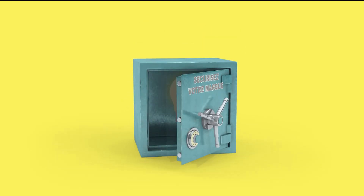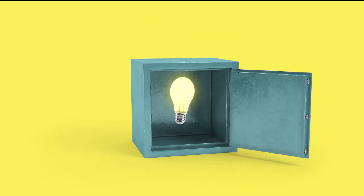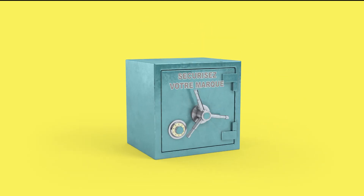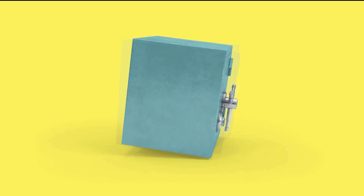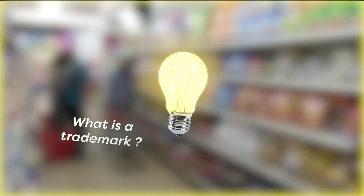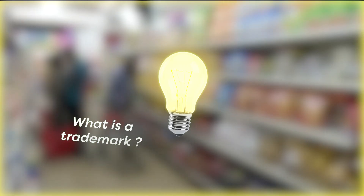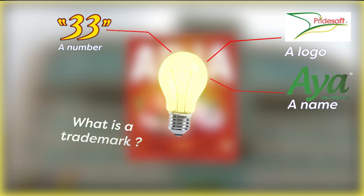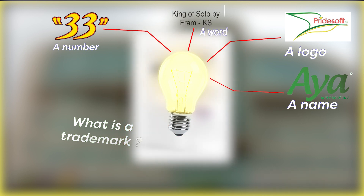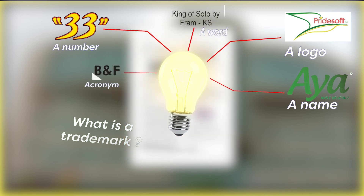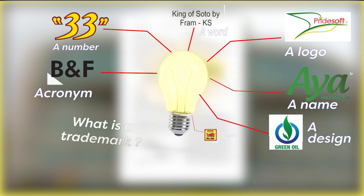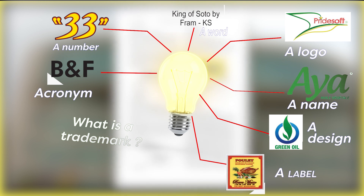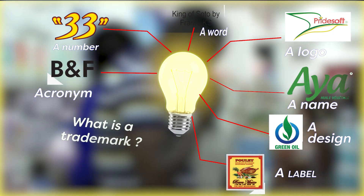How to Protect Your Trademark at OAPI. A trademark is a sign capable of distinguishing the goods or services of one enterprise from those of other enterprises. It can be a logo, a name, a number, a word, or a combination of words, an acronym, a design, a label, and even a sound or audiovisual sign.